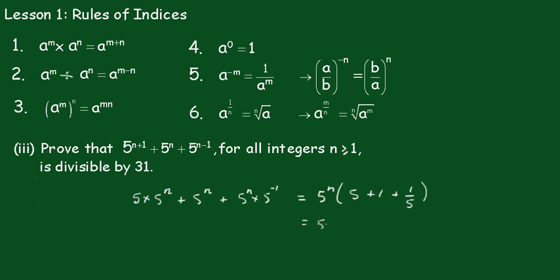Now, that becomes 25 plus 5 plus 1 all over 5, which is, of course, 5 to the n minus 1 outside of 31.